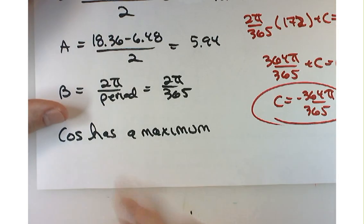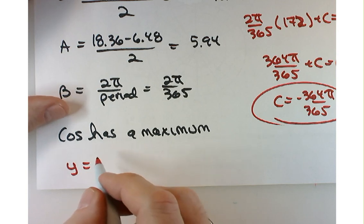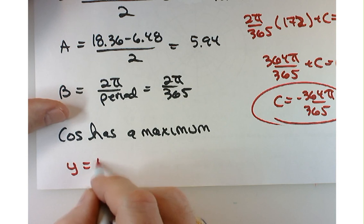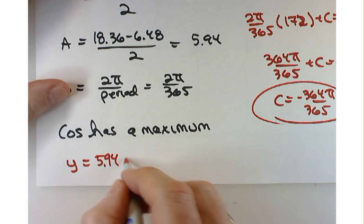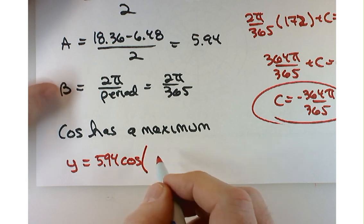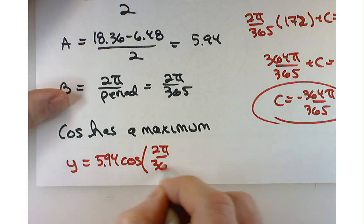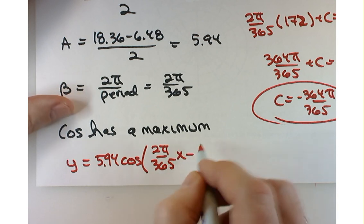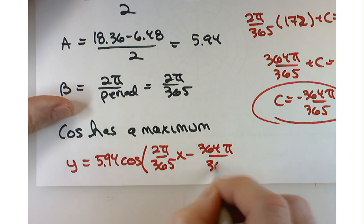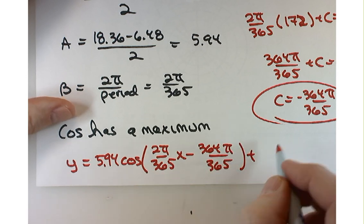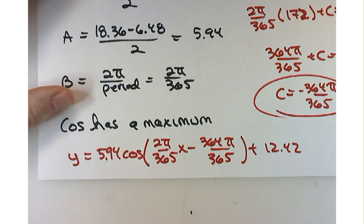Let's put all that together. y equals - my brain has kind of turned to mush just like yours. So I'm happy we're at the end here - 5.94 times cosine of b, which is 2 pi over 365x minus 364 pi over 365 plus d, which was 12.42. Whew. Nice. I promise no more than 6 or 8 of those on an exam, so no worries.